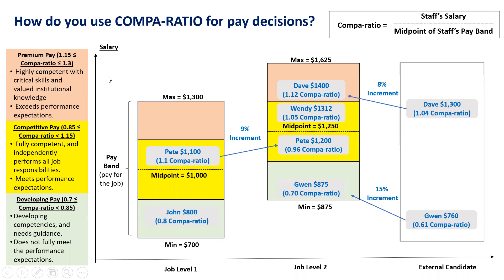Let's go through a few examples. Pete is our staff. His current salary is $1,100 and his compa-ratio at job level one is 1.1 — calculated as $1,100 divided by the midpoint of $1,000. If I want to promote Pete from job level one to job level two, I would give him a 9% increment to bring his salary to $1,200. I arrive at $1,200 because of internal equity — at job level two, Pete's experience and skill is less than Wendy's.